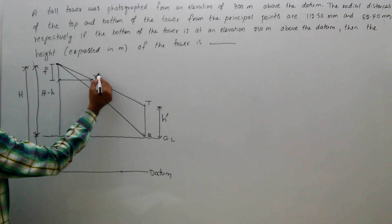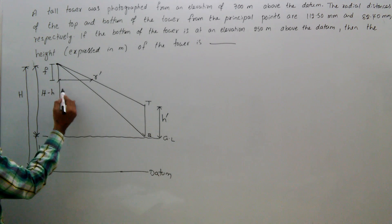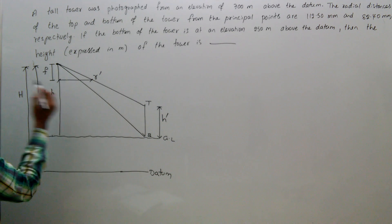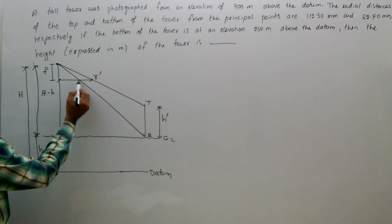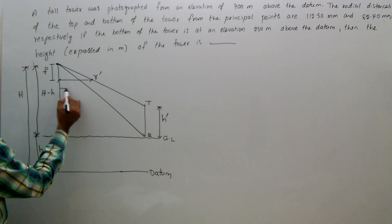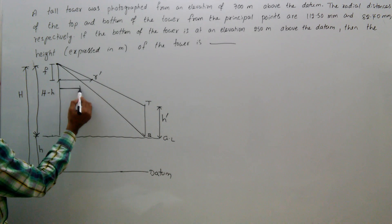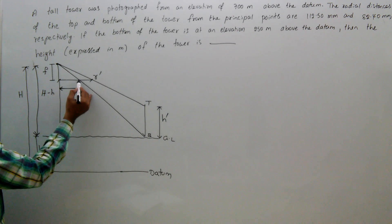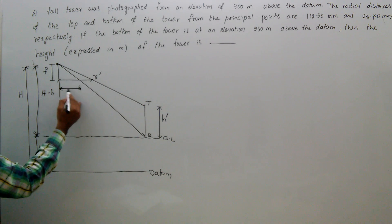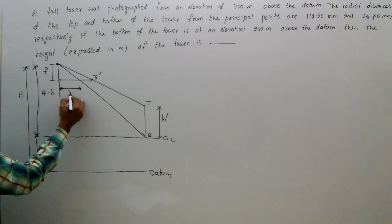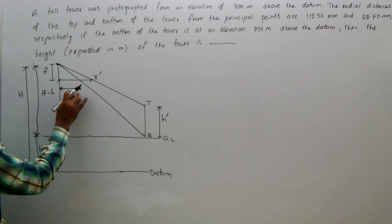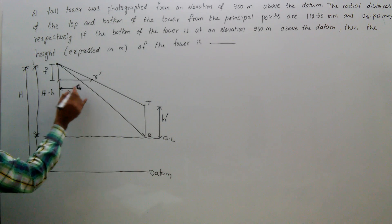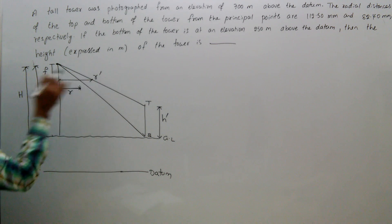Here to here, take this as r-dash. And this one inside the principal point — this is one point, this is one point, this is one point. Take this as r. So r and r-dash: this distance is r-dash, this distance is r.